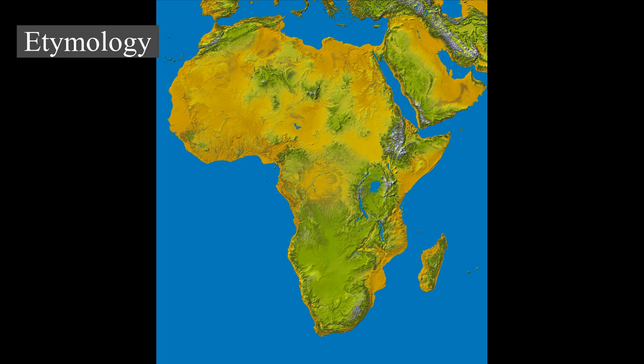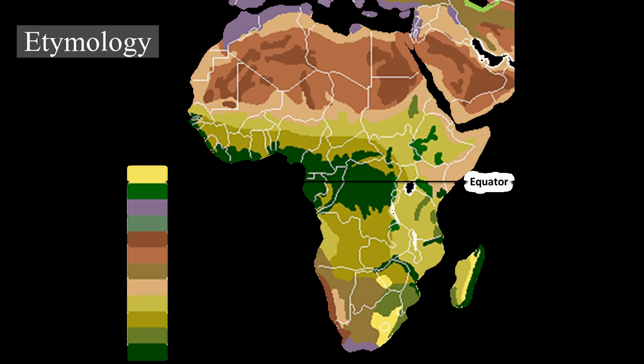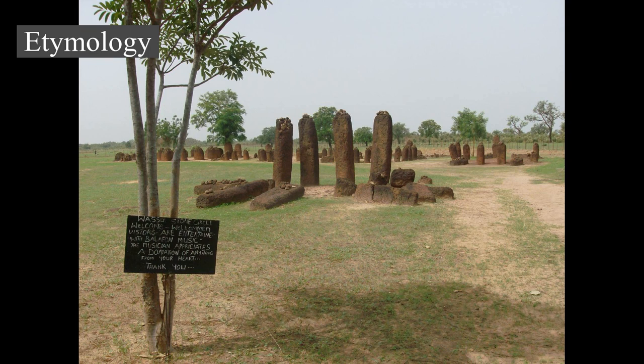Under Roman rule, Carthage became the capital of the province then named Africa Proconsularis, following its defeat of the Carthaginians in the Third Punic War in 146 BC, which also included the coastal part of modern Libya. The Latin suffix '-ica' can sometimes be used to denote a land, e.g., in Celtica from Celti, as used by Julius Caesar. The later Muslim region of Ifriqiya, following its conquest of the Byzantine Eastern Roman Empire's Exarchate of Africa, also preserved a form of the name.